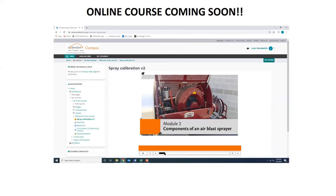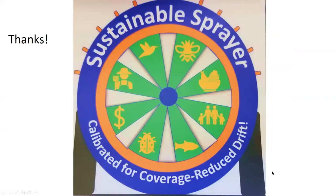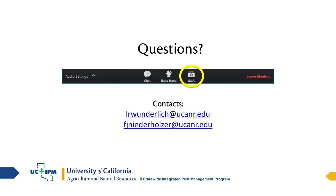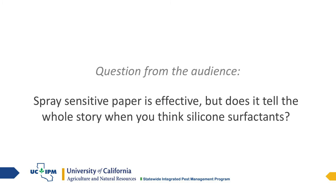Moving to Q&A. The first question: is water-sensitive paper effective, but does it tell the whole story when using silicone surfactants? The honest answer is that water-sensitive paper never tells the whole story. It's a coated piece of paper — not a leaf, not waxy fruit — and reacts differently than plant tissue. With silicone surfactants it would probably show more spread. Very fine drops aren't detected either. Apps like SnapCard and SmartSpray can give percent coverage from a photo of the card, but lighting and camera position affect readings. It's a useful tool for presence/absence and uniformity checking, but not a complete picture.